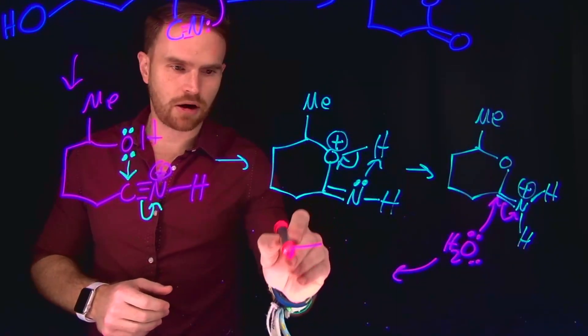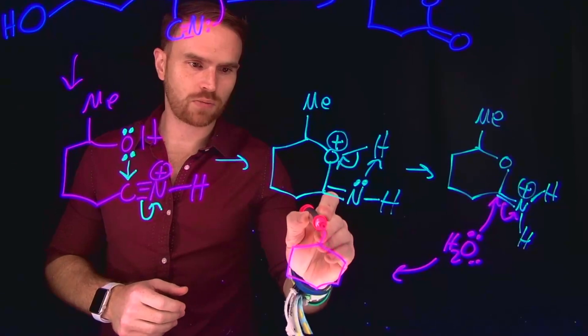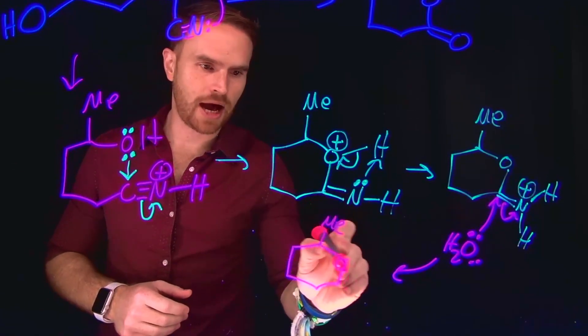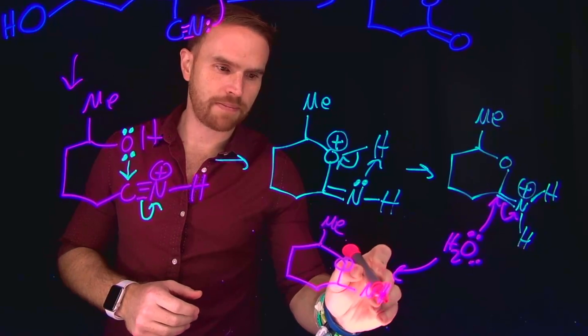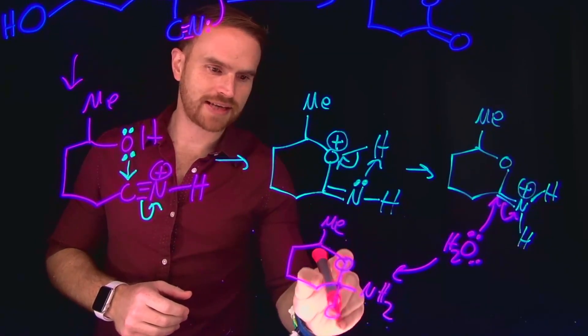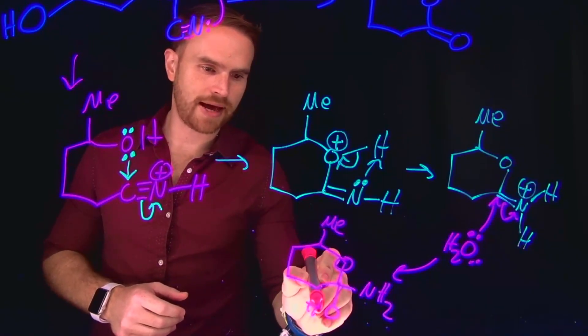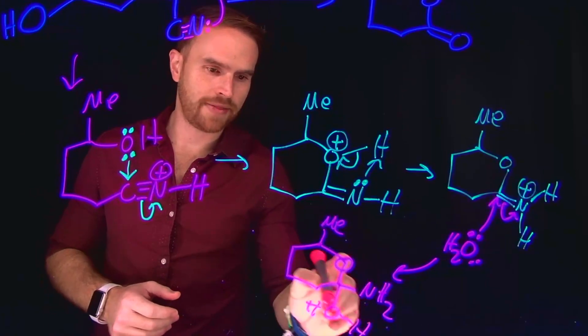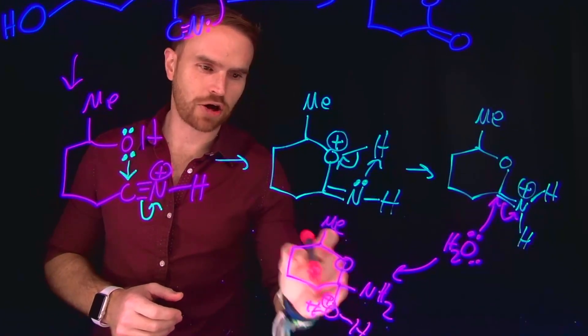So the product of this transformation, then, is going to be our six-membered ring system with our methyl group at the top and oxygen at this position. Now we have a primary amine located here, and it is attached to a carbon that has an OH2 group on it. And that OH2 is going to be positively charged.